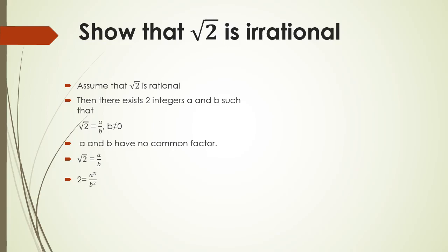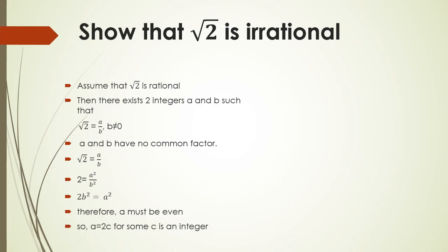Therefore, 2 = A²/B². Multiplying both sides by B² gives 2B² = A². Therefore, A must be even because A² = 2 times some integer, and since A² is even, A is even. So A = 2C for some integer C.